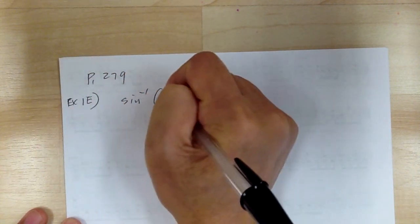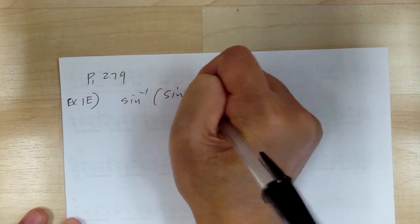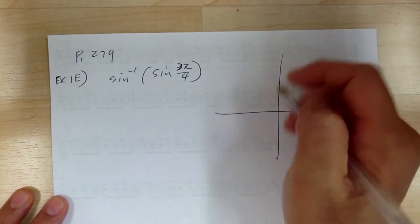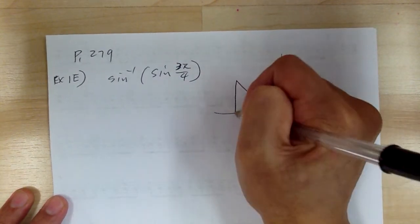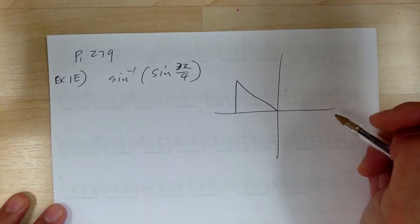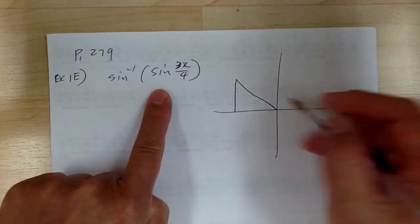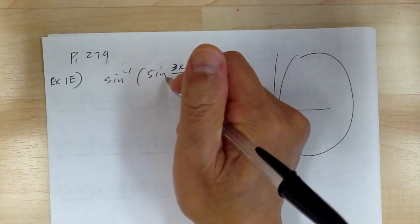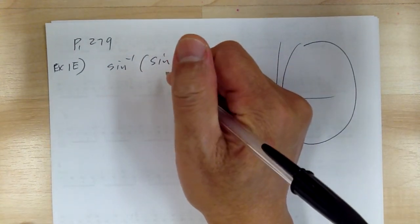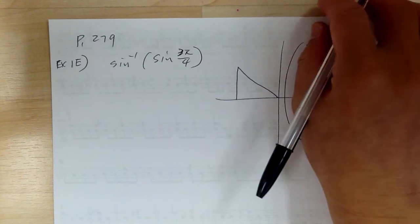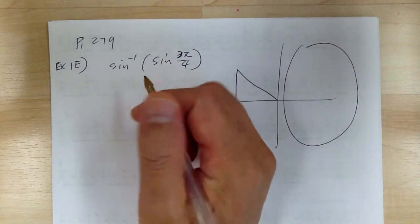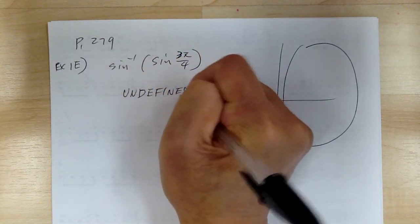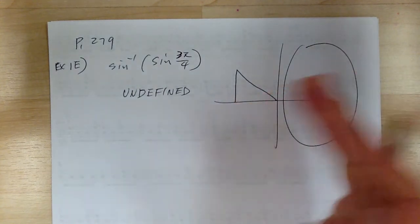Example 1E: inverse sine of sine of 3 pi over 4. Now 3 pi over 4 is in quadrant two, which is right over here. You have a problem because the inverse sine function can only use quadrants one and four. Since 3 pi over 4 is out of that boundary, it is undefined — you cannot use that angle.